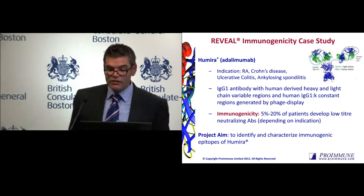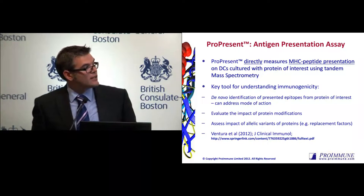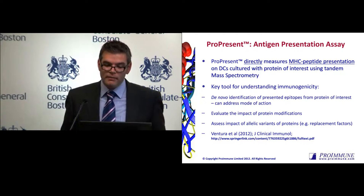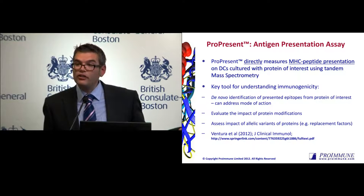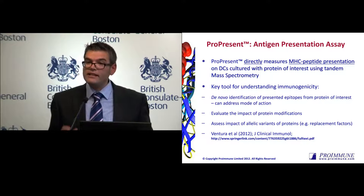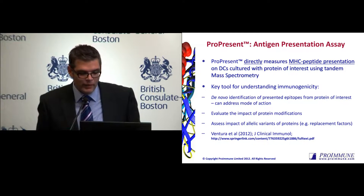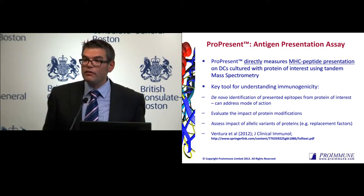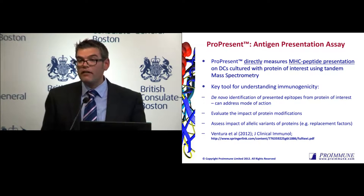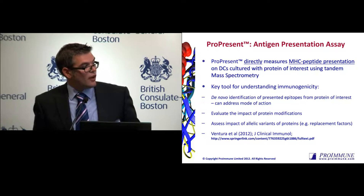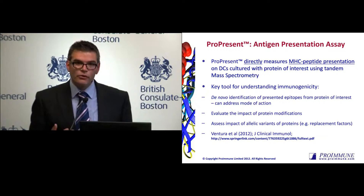The aim of our project was to identify and characterize individual epitopes of Humira that are naturally processed and presented. To do that, we use our technology called ProPresent, which we've developed based on healthy dendritic cells derived from healthy donors. It directly measures peptides that are presented by MHC molecules on the surface of dendritic cells cultured with the therapeutic of interest. Using tandem mass spectrometry, we can then sequence those individual peptides and characterize them. What's really changed the game in this area is the sensitivity of the instruments available — it's a really nice marriage between proteomics and immunology.